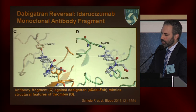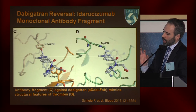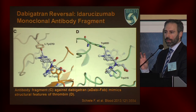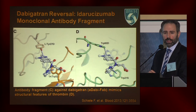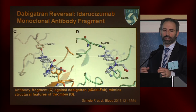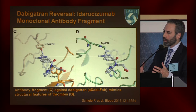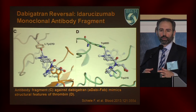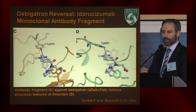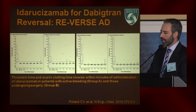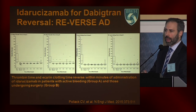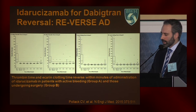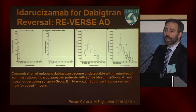Here we can see dabigatran reversal with idarucizumab. The very interesting thing is it's a monoclonal antibody fragment that mimics thrombin but has none of the catalytic activity of thrombin. It simply binds with high affinity to dabigatran but doesn't affect coagulation, so you can't actually make a patient prothrombotic — you can't cause an MI or thrombosis with this. In the pivotal study for idarucizumab called RE-VERSE AD, administration as a double bolus very quickly reverses measures of anticoagulation like the thrombin time and ecarin clotting time, and very rapidly eliminates dabigatran from the system.